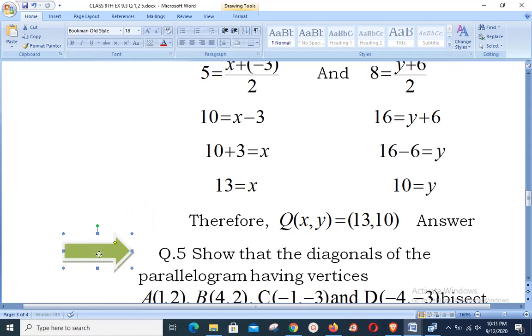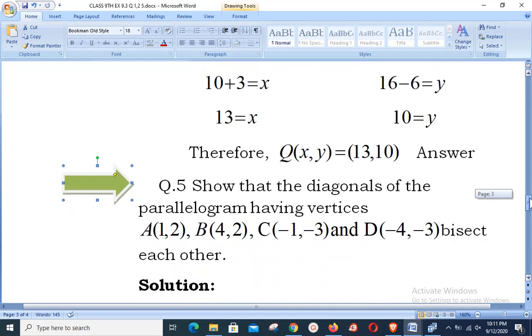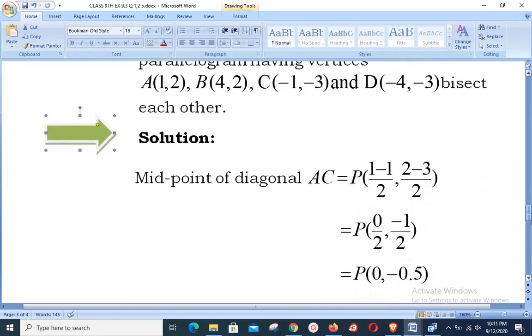Question number 5 says: Show that the diagonals of a parallelogram having vertices A(1,2), B(4,2), C(-1,-3), and D(-4,-3) bisect each other. Students, we already know that diagonals of a parallelogram bisect each other. So here we want to calculate that if the midpoint of both diagonals results the same, that means they coincide and the desired statement will be completed.